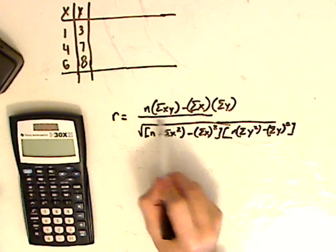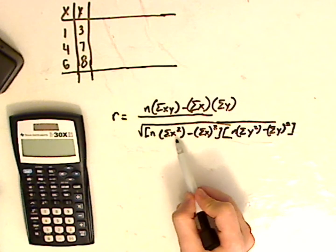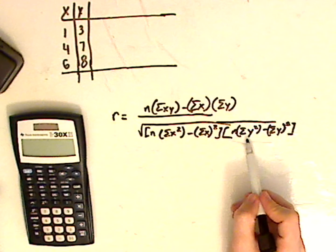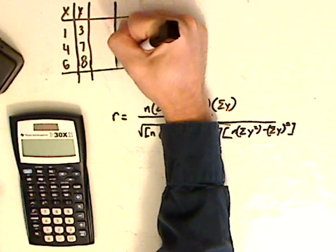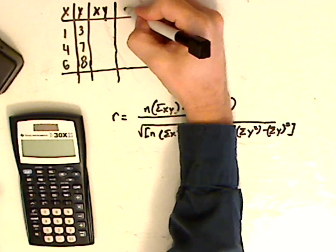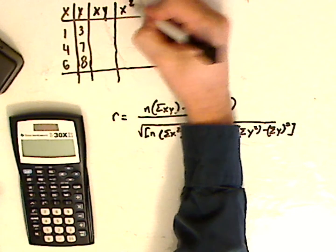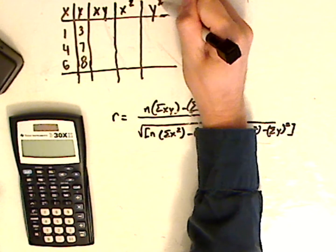Now notice what you have. You have x times y, you have just plain x's, you have x squares and then you have y squares as well. So I'm going to form three columns. I need x, y, I also need x squared and then I also need y squared.